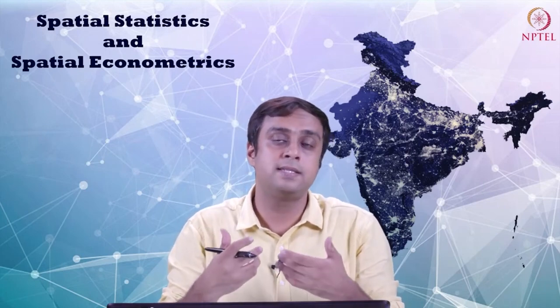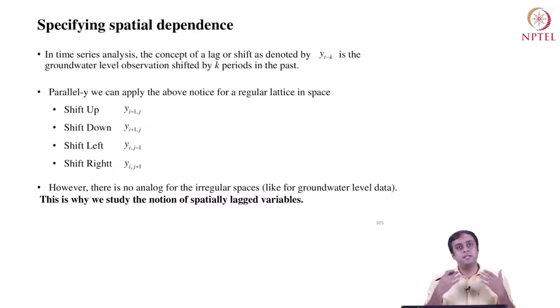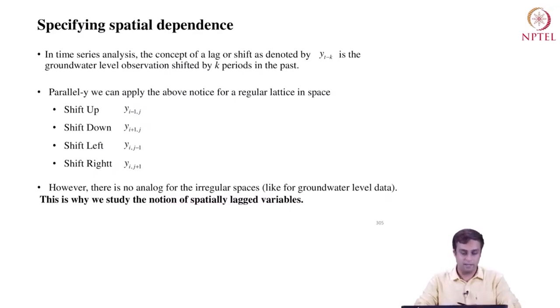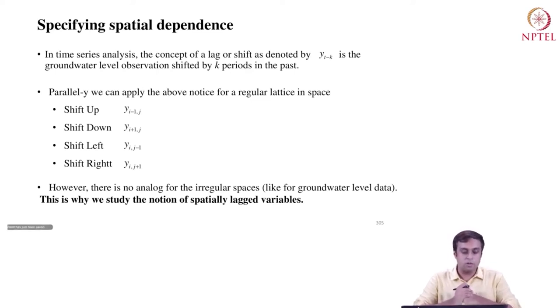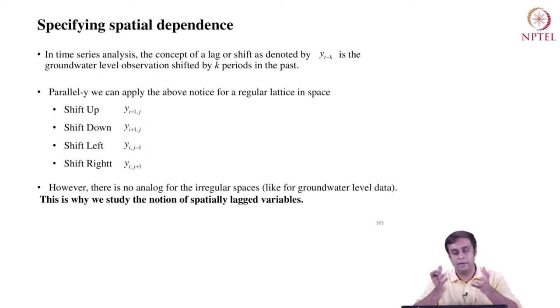In case there are adverse impacts or consequences, how do we go about fixing them? Let us begin by specifying spatial dependence in a regression model. I have proposed to start with a time series analysis analog, where we have this concept of a lag or a shift.